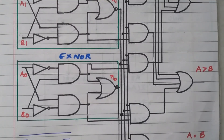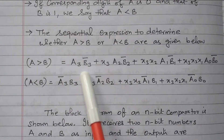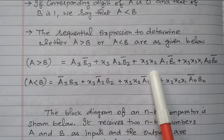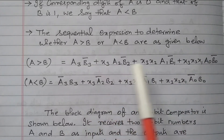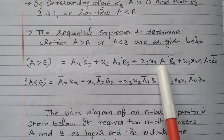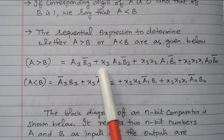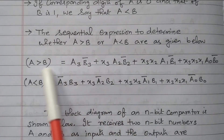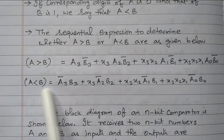Looking at the expression again: for A greater than B, the four terms use A3·B3', X3·A2·B2', X3·X2·A1·B1', and X3·X2·X1·A0·B0'. All these terms from the equivalent XNOR gates are connected to AND gates, then four AND gates feed one OR gate to implement A greater than B. Similarly, four AND gates and one OR gate implement A less than B.